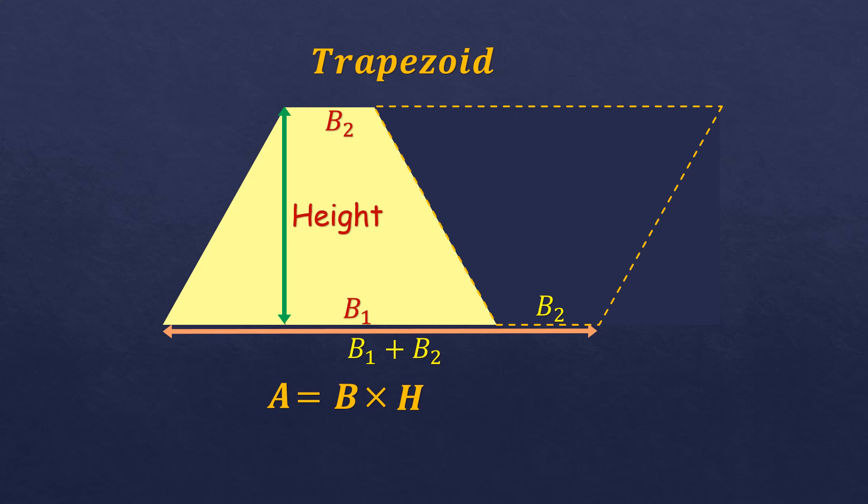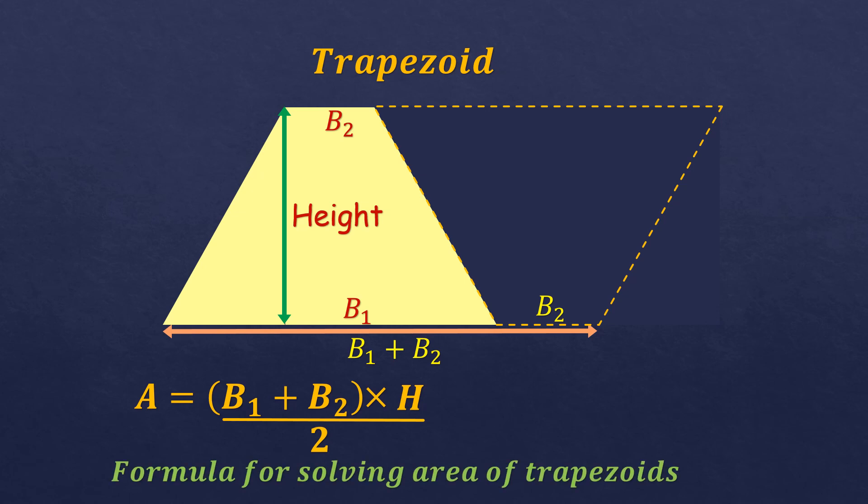As for the formula, we're going to change the b (or the base) into b1 plus b2. But again, since the trapezoid is just half of this parallelogram, we divide the formula by two. This is the formula for solving the area of trapezoids.